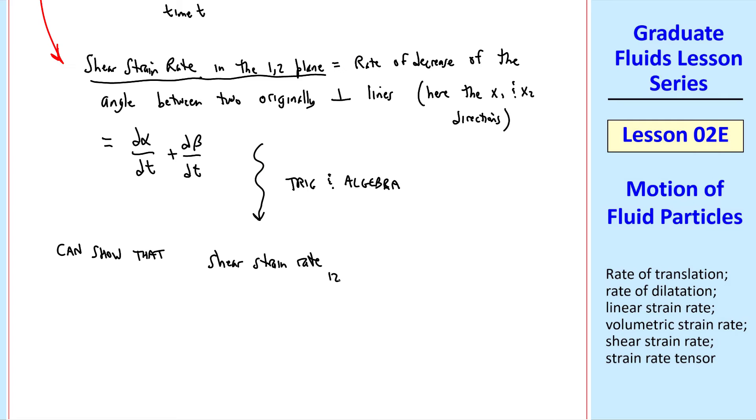You can show that the shear strain rate, sub 1, 2, meaning in the x1 and x2 directions, or x1 and x2 plane, is del u1 del x2 plus del u2 del x1. Again, letting this fluid particle shrink to a point, so this is really the shear strain rate at a point.